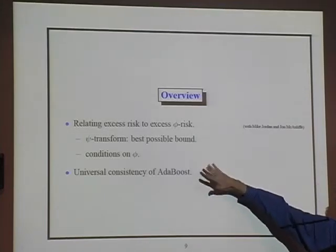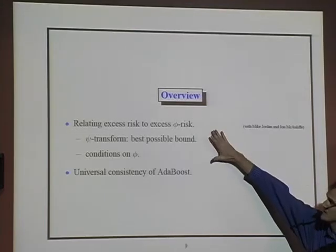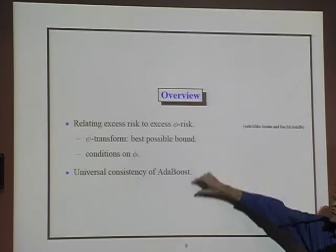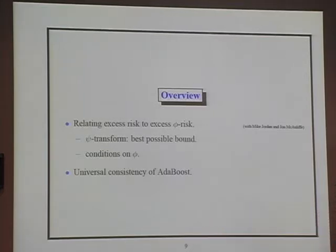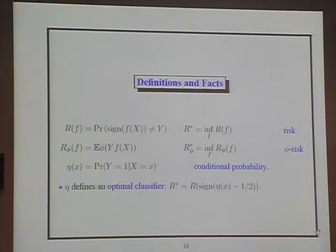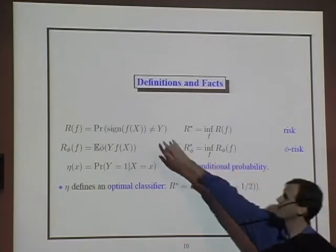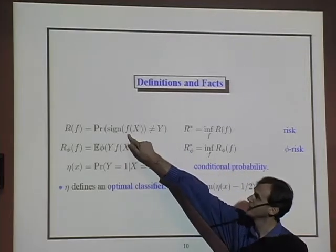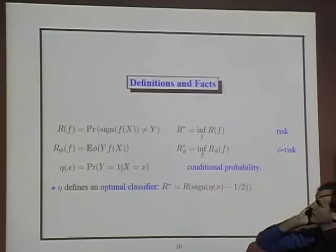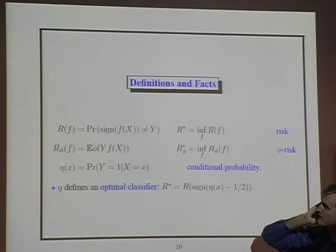In the second part of the talk, we'll apply these results to understand the asymptotic behavior of Adaboost: does it lead to optimal decisions as we see more and more data? So let's start with a bit of notation. We're interested in this probability of making a mistake when we threshold our function — we'll call that the risk, r of f.